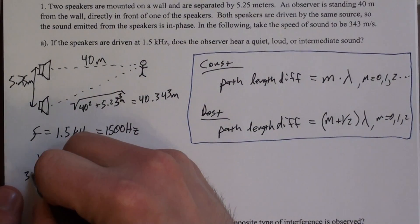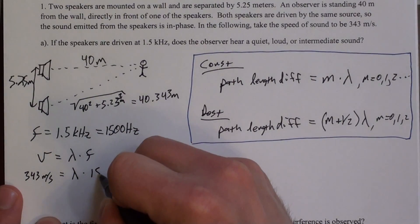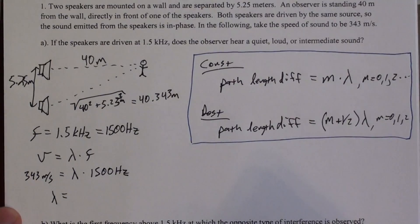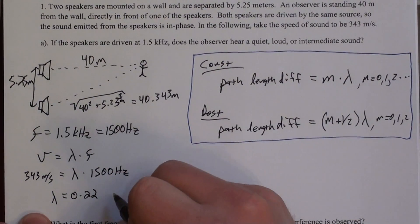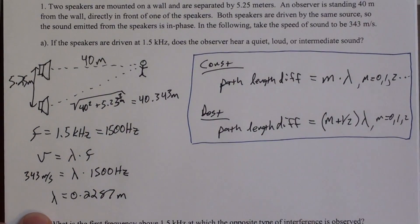So the relationship here is that v equals lambda f. So v is 343 meters per second. Lambda is what we're looking for, and f is 1500 hertz. If you do that math, the wavelength turns out to be 0.2287 meters.